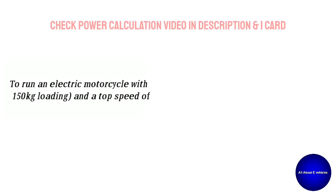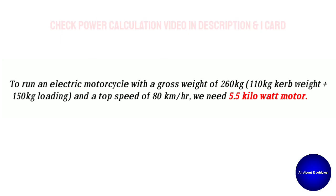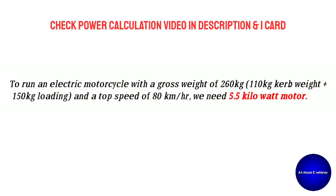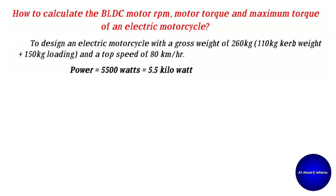Hello friends. In the previous video, we designed a motorcycle with a gross weight of 260 kilograms and a top speed of 80 kilometers per hour. In the last video, we found the motor power as 5500 watts, that is 5.5 kilowatts. Now, as a continuation of that calculation, we will learn how to calculate the BLDC motor RPM, motor torque, and maximum torque of an electric motorcycle.